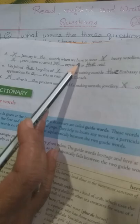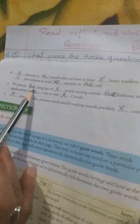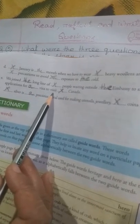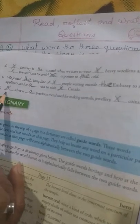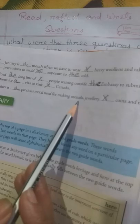Then come to the next page. D number Cross January is the month when we have to wear cross heavy woolens and take cross precautions to avoid cross exposure to the cold. E number We joined the long line of cross people waiting outside the embassy to submit our applications for a visa to visit cross Canada. F number Cross silver is a precious metal used for making utensils, jewelry, cross coins and more. Thank you.